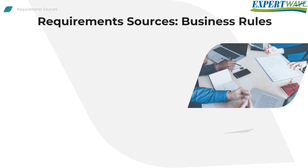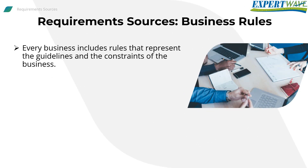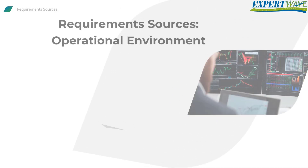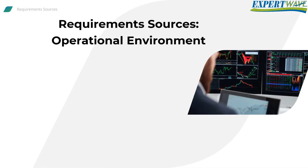Business Rules: every business includes rules that represent the guidelines and the constraints of the business. For example, in a university registration system, students who still have unpaid tuition from the last semester can't register for new courses in the next semester until all remaining tuition is paid. Business Rules, unlike domain knowledge, are specific to the company or the business.